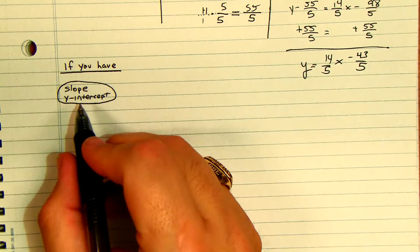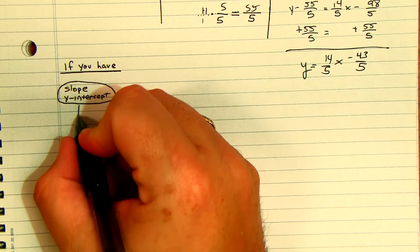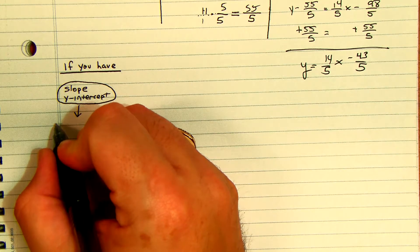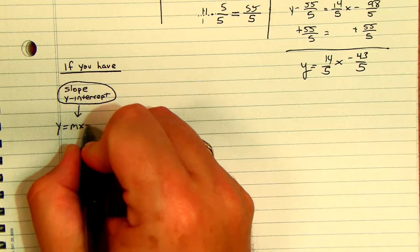First off, if you have slope and y-intercept you are going to instantly go to y equals mx plus b.